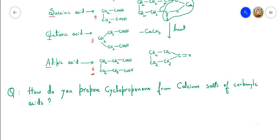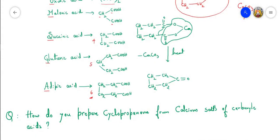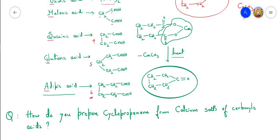Hello students. In the last class we learned the preparation of cyclopentanone from adipic acid by taking a calcium salt of adipate and subjecting it to dry distillation by heating to obtain cyclopentanone. Whenever we require a 5-carbon cyclic ketone, we have to take one carbon extra — here we used adipic acid which has 6 carbon atoms.